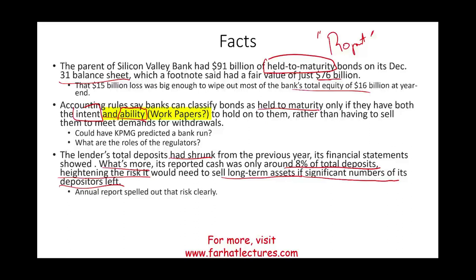The question is, how do we know whether significant numbers would leave or not? We don't know, but the annual report clearly spelled out that risk. The annual report says if a significant number of depositors leave, we're going to be in trouble. And no bank, no matter how small or big, can survive a bank run.